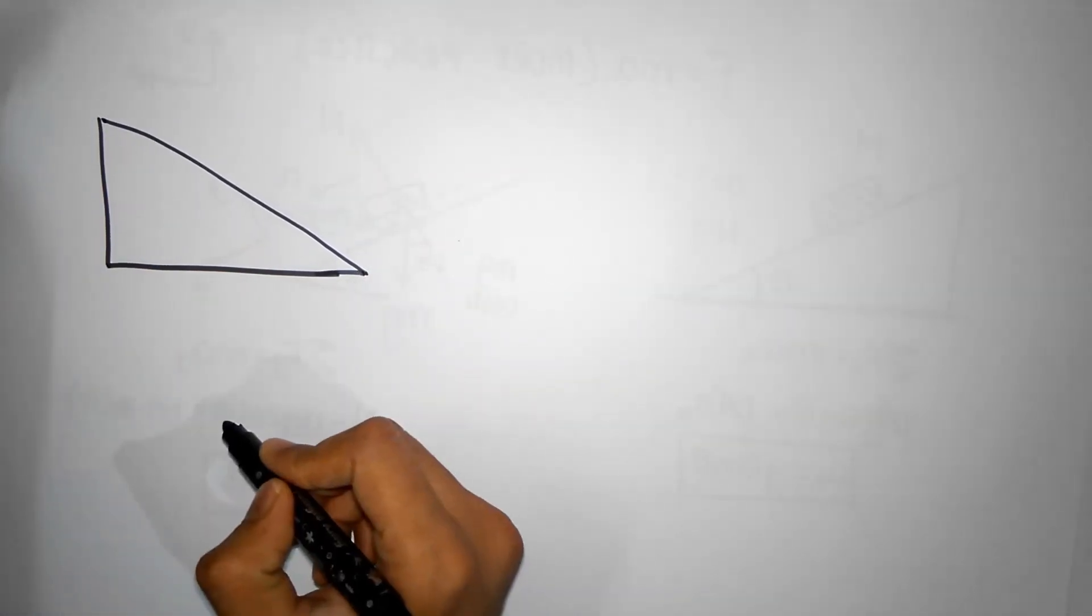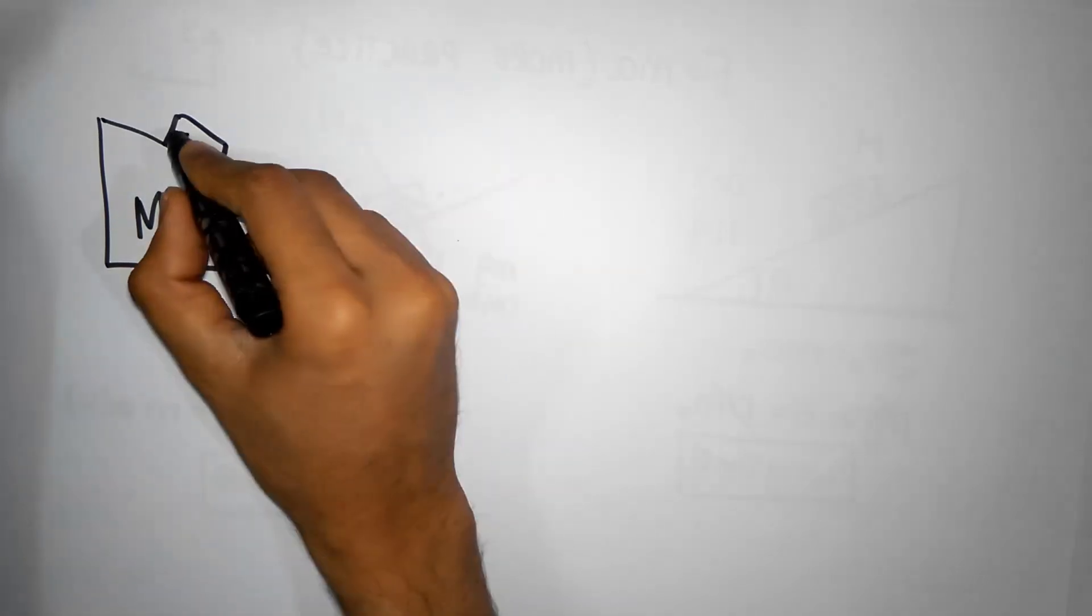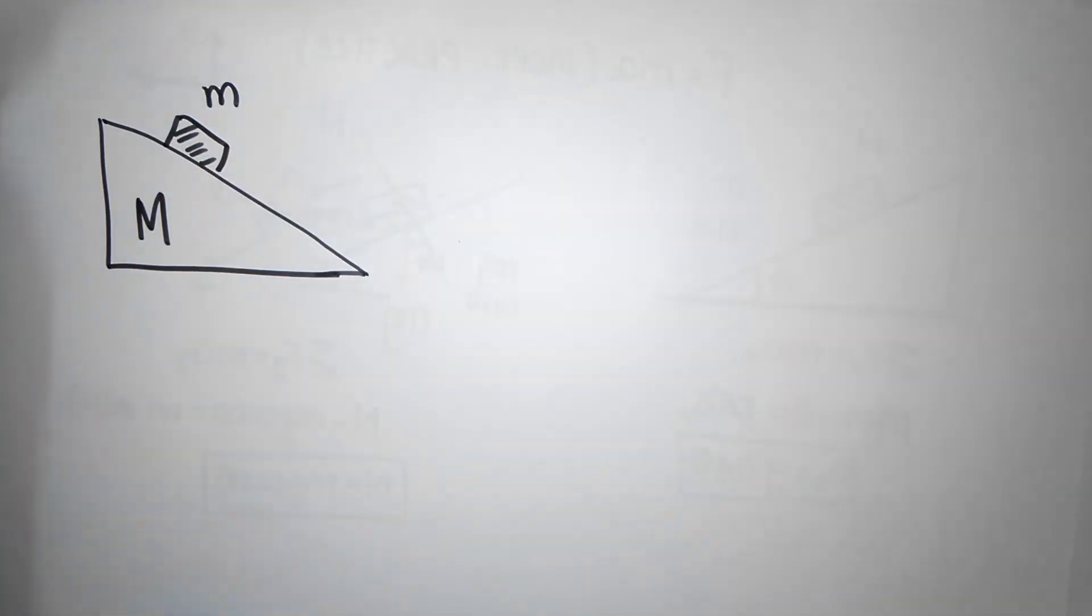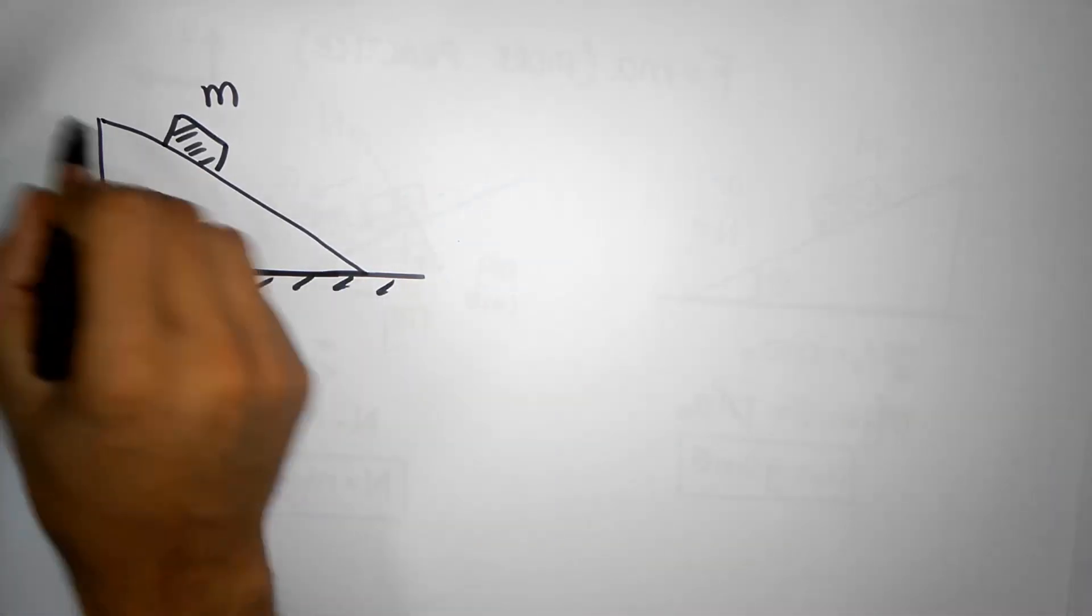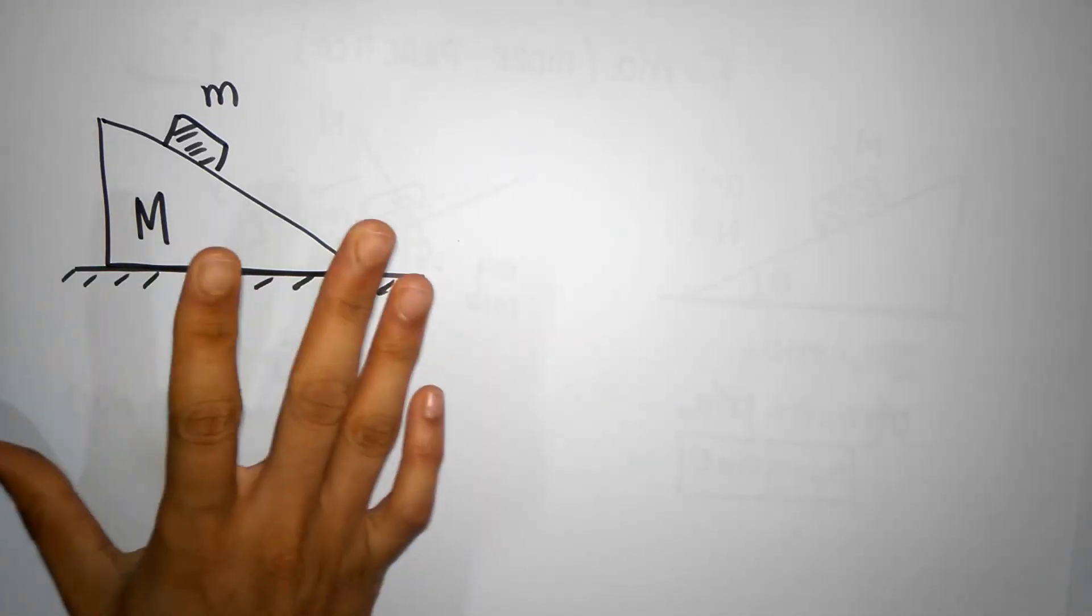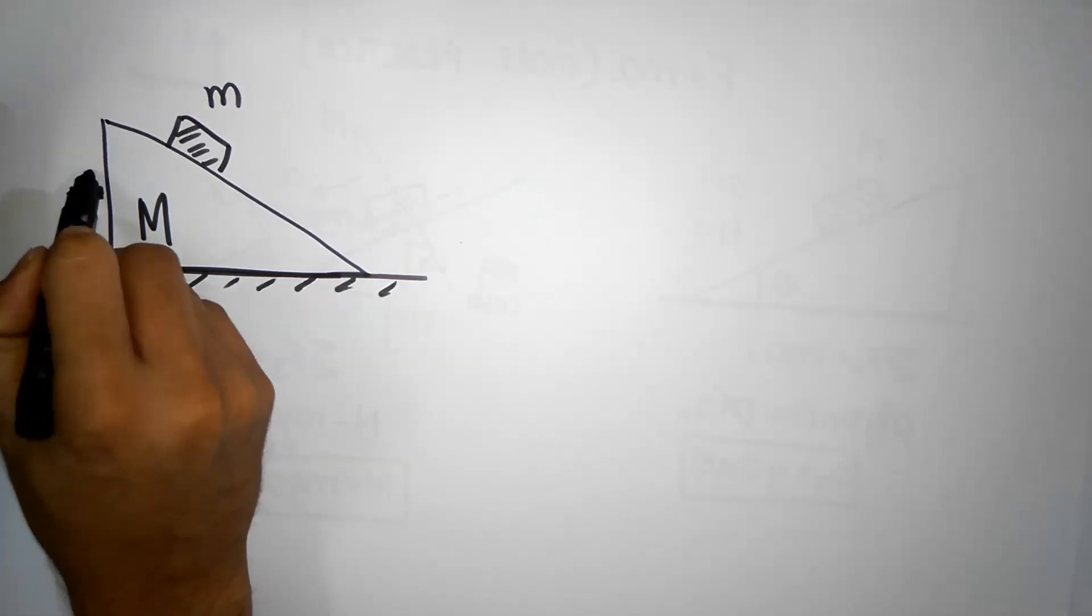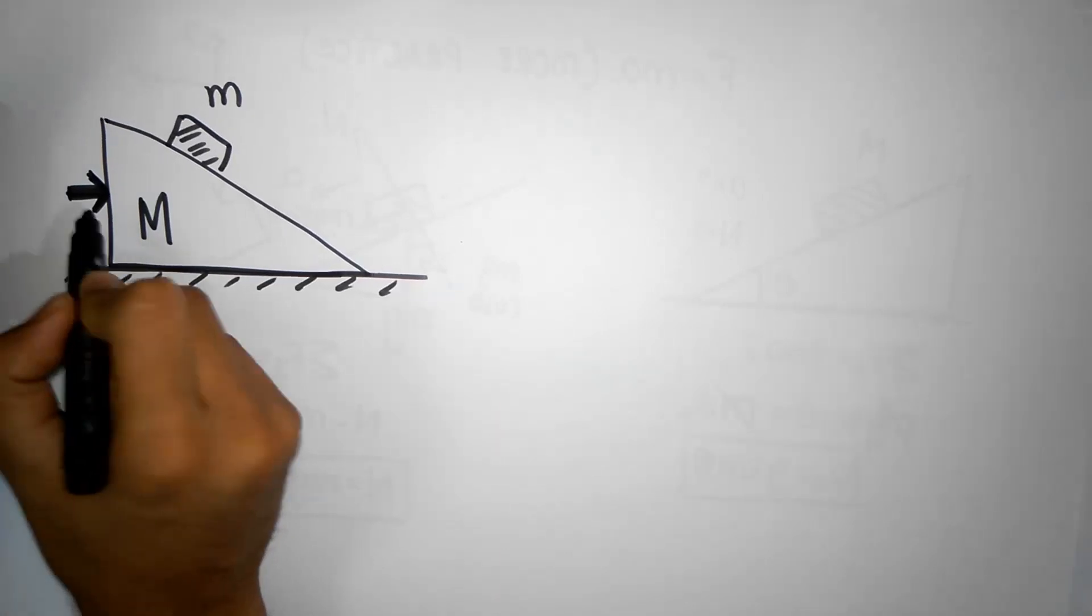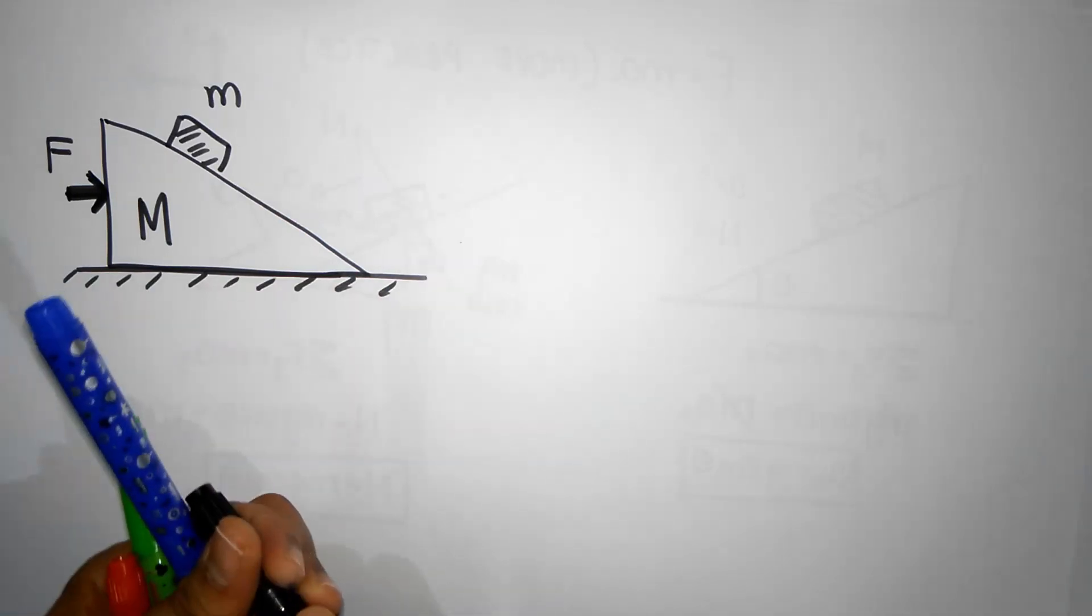In this problem, we have a wedge with mass capital M and a block with mass smaller m. There's a frictionless floor and frictionless surface. Our goal is to push the whole system with force F so it accelerates towards the right.